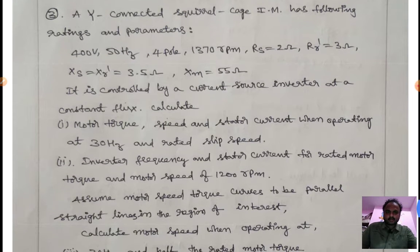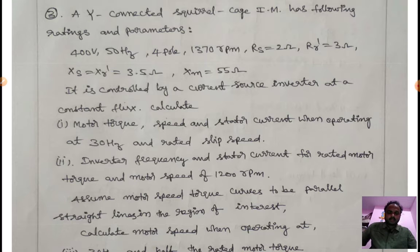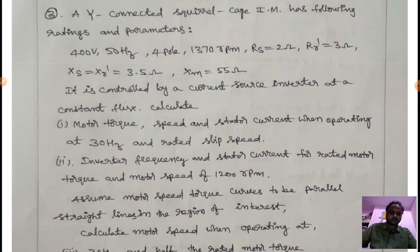Moving to the next problem: a star-connected squirrel cage induction motor with the following ratings and parameters — 400 V, 4-pole, 1370 rpm, Rs = 2 Ω, Rr' = 3 Ω, Xs = Xr' = 3.5 Ω, Xm = 55 Ω. The motor is controlled by a current source inverter at constant flux. Calculate: first, motor torque; second, motor torque, speed, and stator current when operating at 30 Hz and rated slip speed.